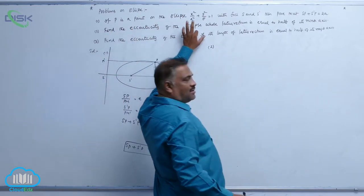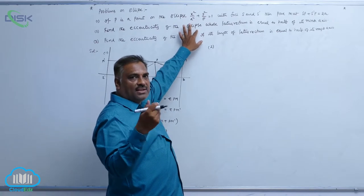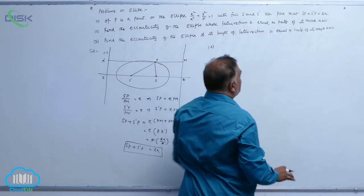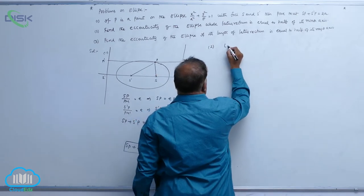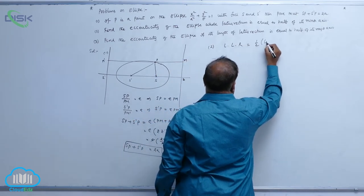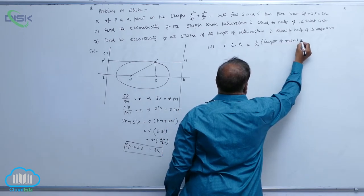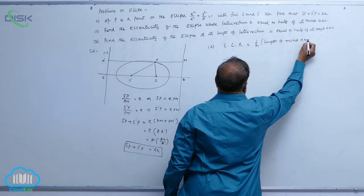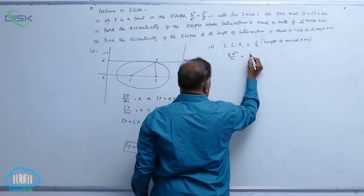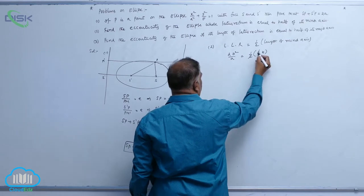Let us come to question number two: find the eccentricity of the ellipse — ellipse not specified, so take the standard equation — whose latus rectum is equal to half of its minor axis. So length of latus rectum equals half the length of minor axis: 2b²/a equals half of 2b.